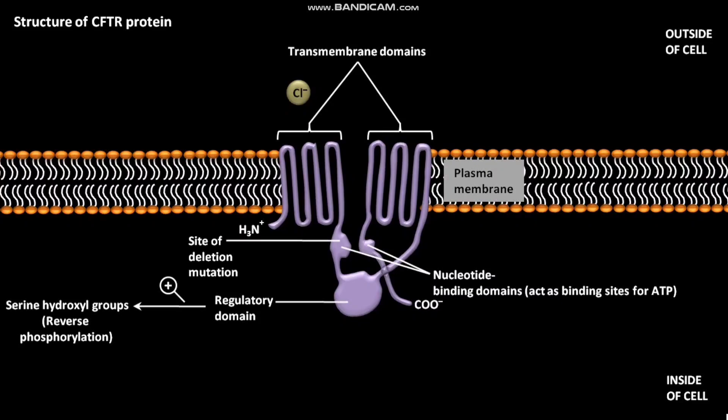The CFTR protein functions as a chloride channel in the cells. When phosphorylation sites in the regulatory domain are changed as a result of a mutation in the CFTR gene, then the channel function is affected.